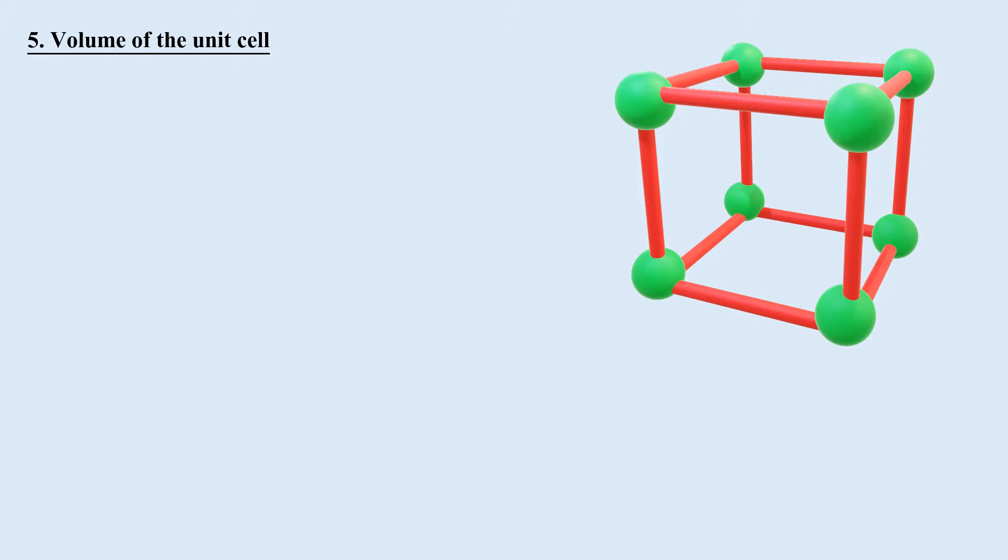Volume of the unit cell: If the lattice parameter of simple cubic unit cell is A, then the volume of this cubic cell will be equal to A cube. In terms of r, A is equal to 2r. Hence, the volume of simple cubic unit cell is 8r cube.